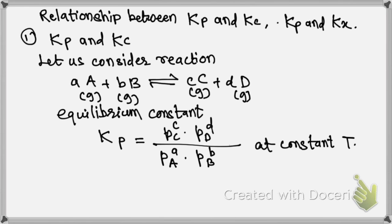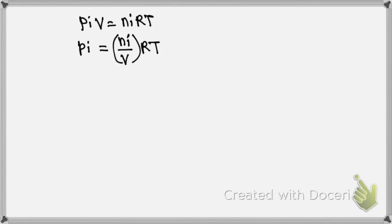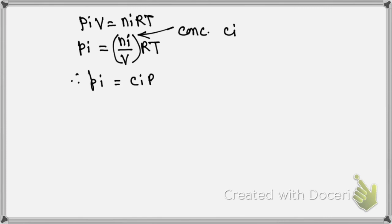We know that from the ideal gas equation, PiV equals NiRT. We can write this as Pi equals Ni divided by V, into RT. This Ni divided by V is nothing but concentration, written as Ci. Therefore, Pi equals Ci into RT.